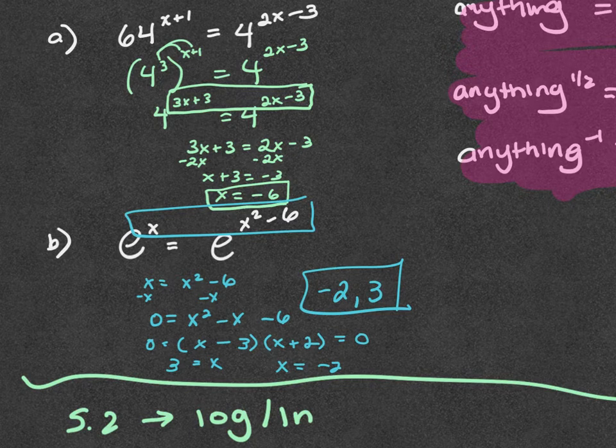There are actually two answers this time: negative 2 and 3. Get it to one side and keep the x-squared term positive — I think it's easier that way.